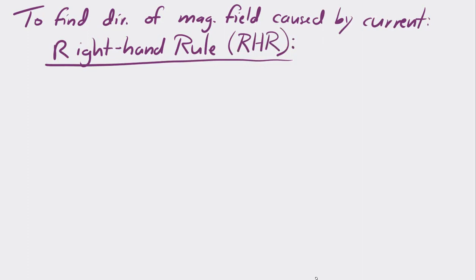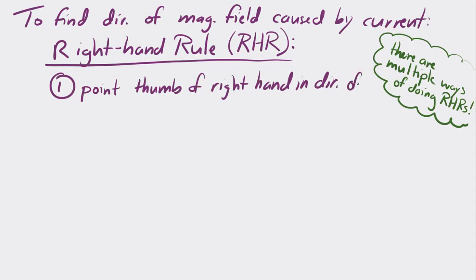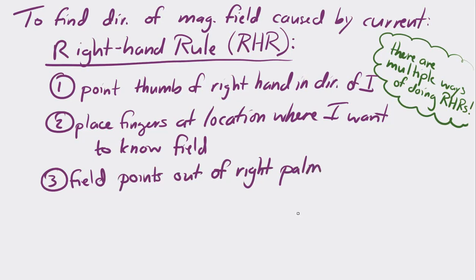The way that I do this — and there are different ways to explain it — my method is: I place my right thumb in the direction of the current, then I take the fingers of my right hand and place them at the point where I want to know the direction of the field. The magnetic field is then directed out of my palm. This seems like weird, mystic stuff, but it works. And honestly, it's not the physicist's fault — this was actually devised by mathematicians. So if you don't like the right-hand rules, don't blame physics.